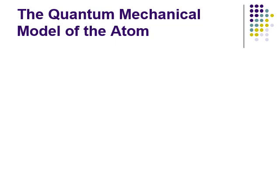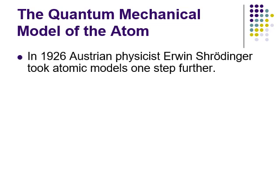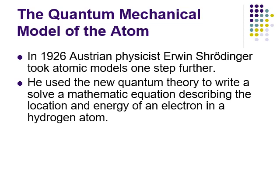Now we're going to look at the modern model of the atom: the quantum mechanical model, which came about in 1926 from Austrian physicist Erwin Schrödinger — yes, the same Schrödinger from Schrödinger's Cat. He used quantum theory — the idea that energies of electrons are quantized — and solved a mathematical equation to describe the location and energy of an electron in a hydrogen atom. He started with hydrogen because it only has one electron, the simplest form of matter.